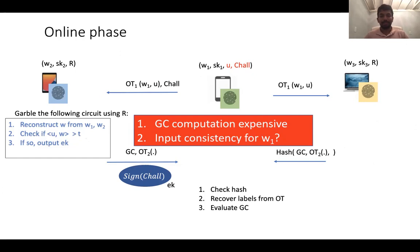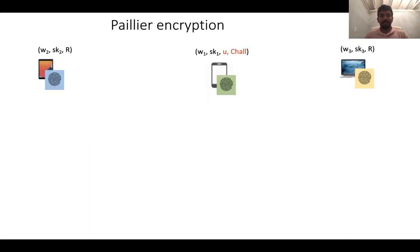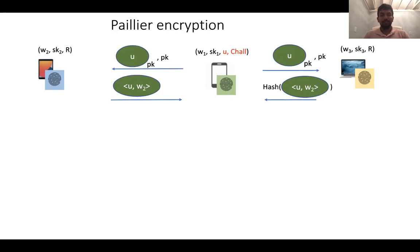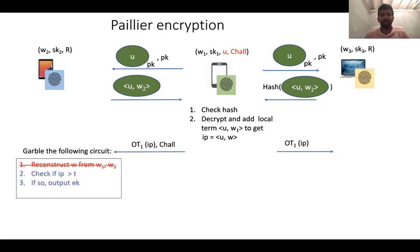To tackle the first problem, we resort to using Paillier encryption, which is an additively homomorphic encryption scheme, to compute the inner product outside the garbled circuit. In more detail, P1 first generates an encryption of its measurement u. P2, using the additively homomorphic encryption scheme, computes an encryption of the inner product between u and W2. P1 can, after checking the hash, decrypt this to learn the inner product between u and W2 in the clear, and adds it to the inner product between u and W1 — which it can compute locally — to compute the actual inner product. Now the garbled circuit does not need to compute the inner product; it can just directly check if this value is greater than the threshold, which makes it much more efficient.